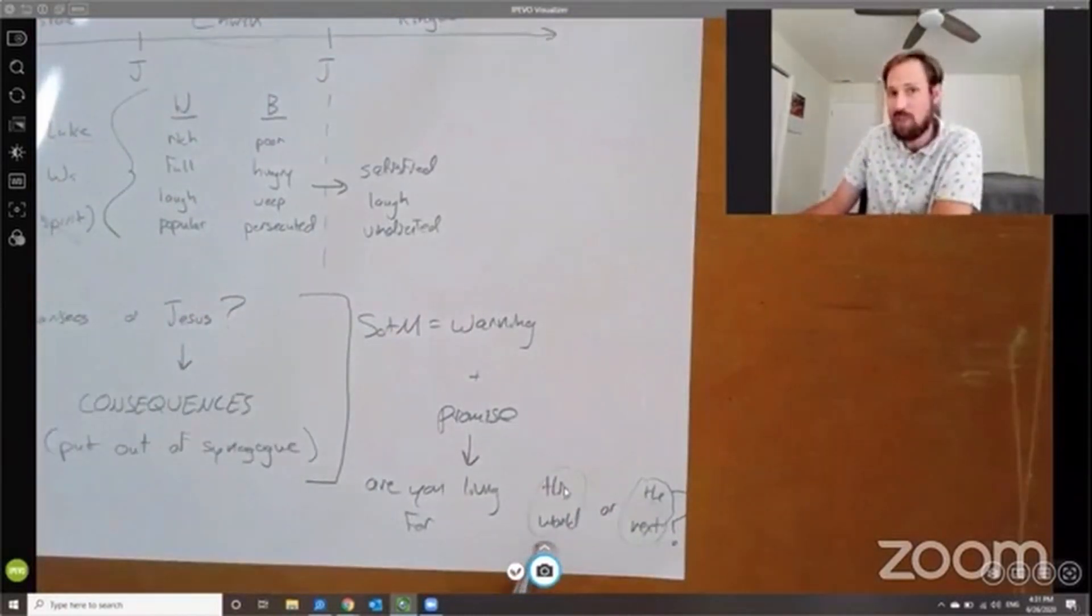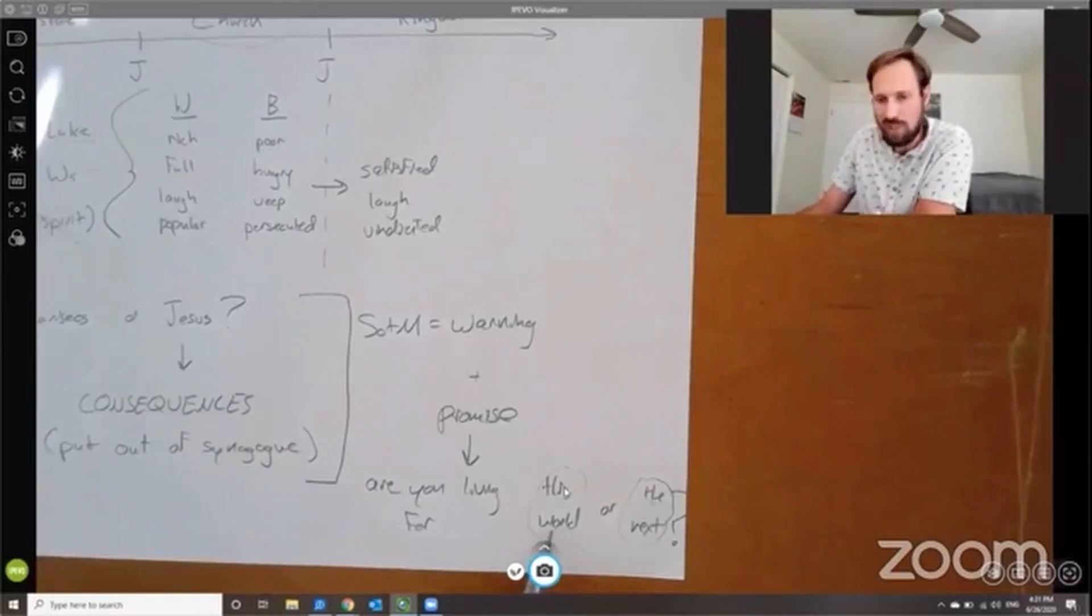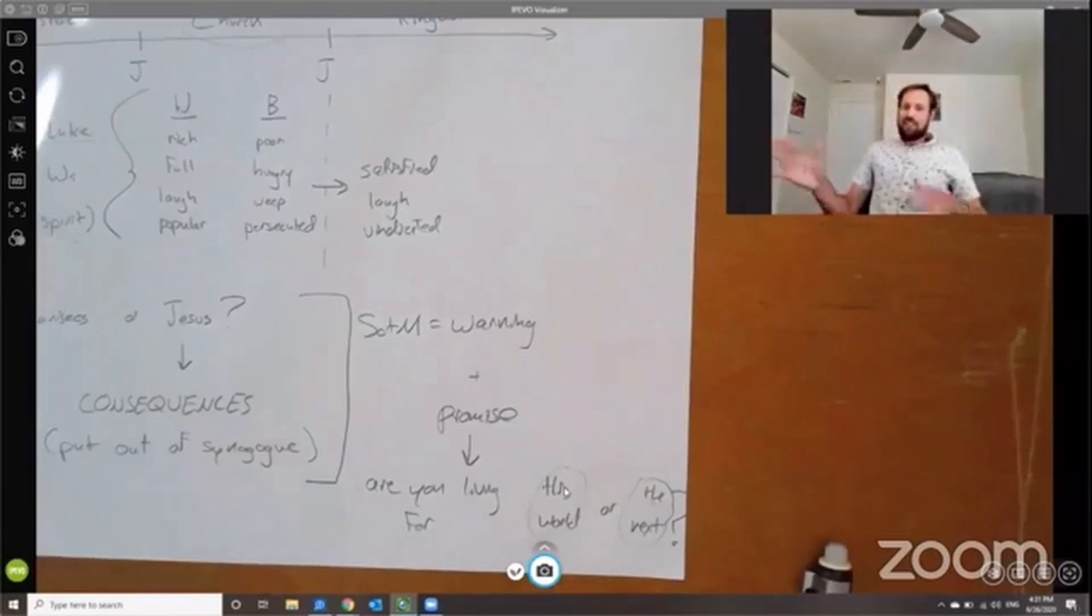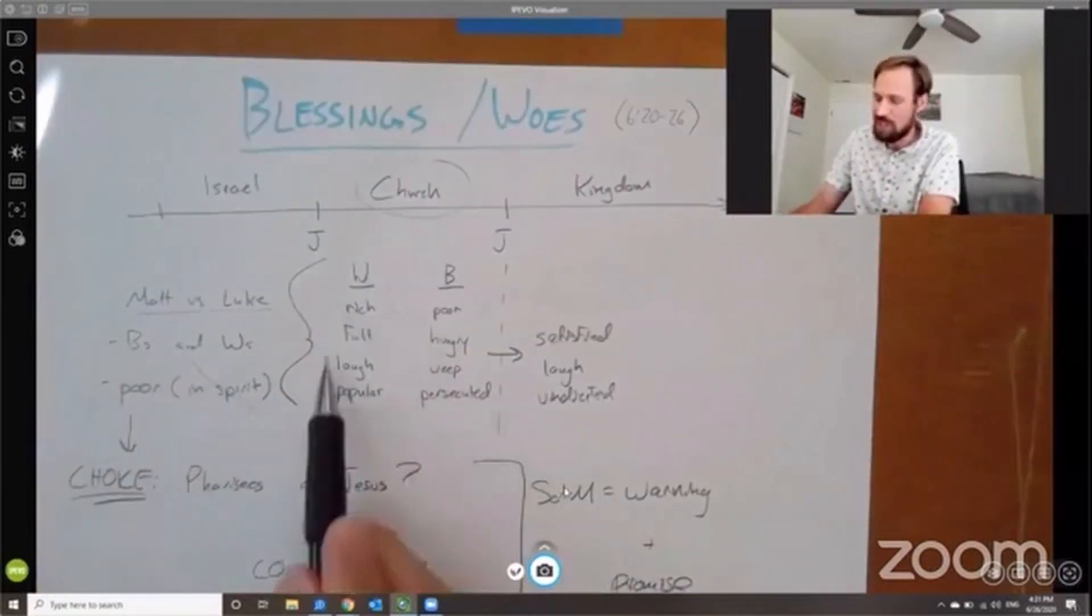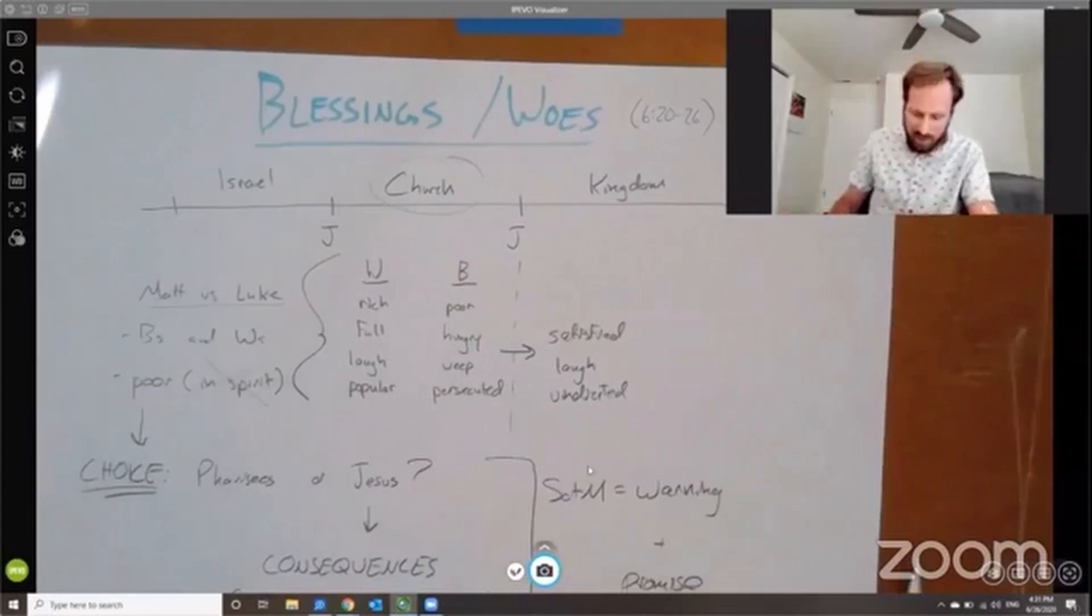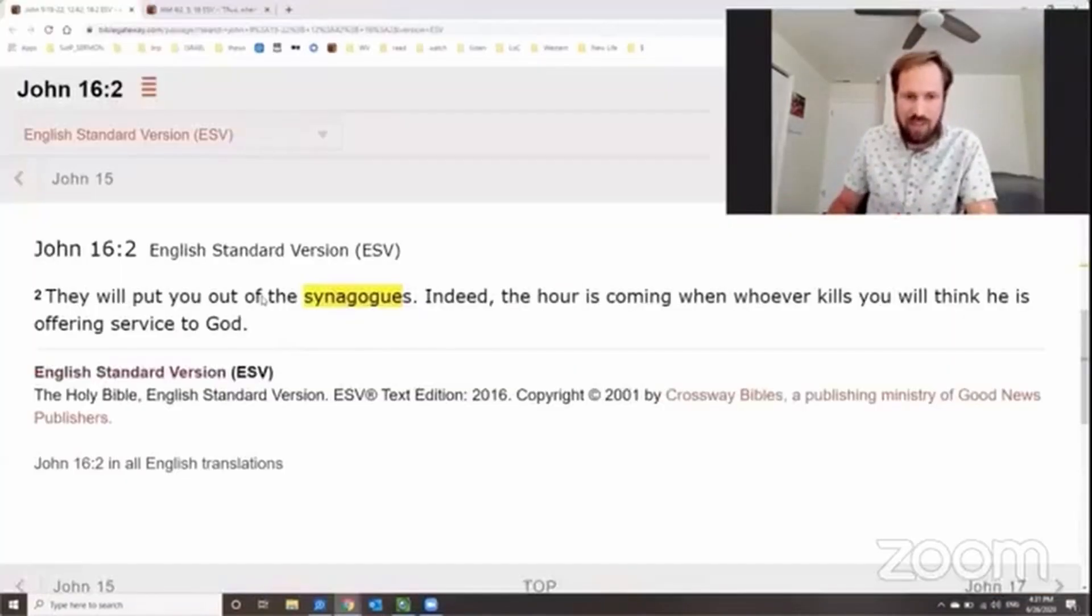Now, there are plenty of examples, even within the Sermon on the Mount, of a group of people who are living for this world. Now, who do you think that group of people is? I've got to return to our, our whole pointing illustration. Who's Jesus pointing at? People living for, for, for these blessings right here. What's the Pharisees? Take a look at Matthew 6.